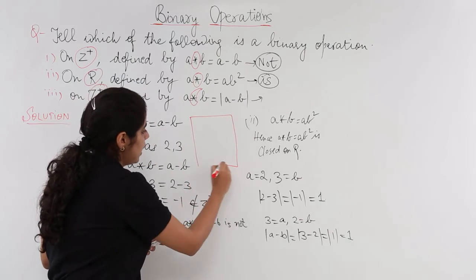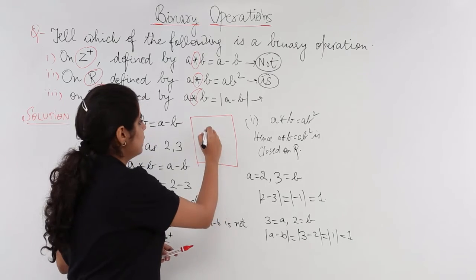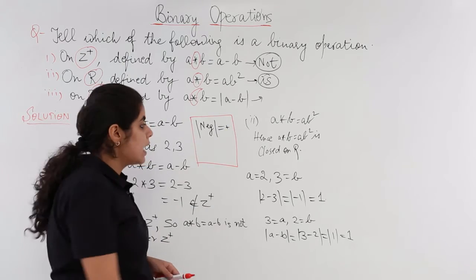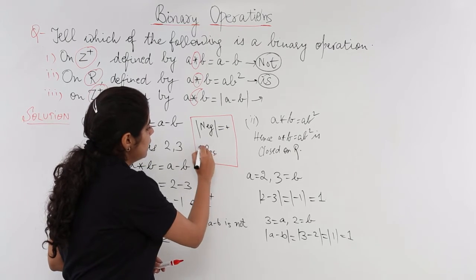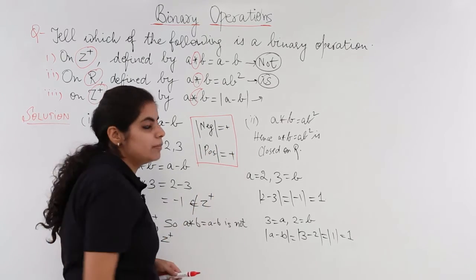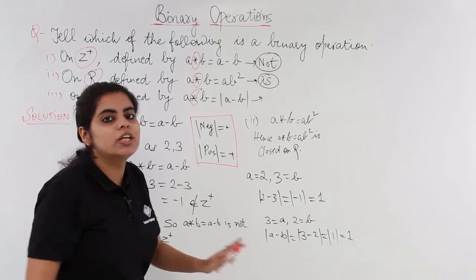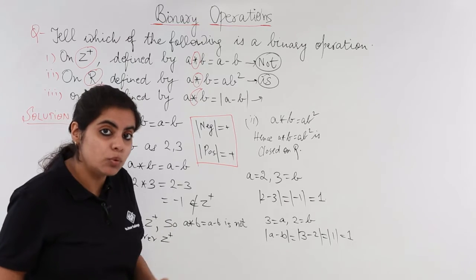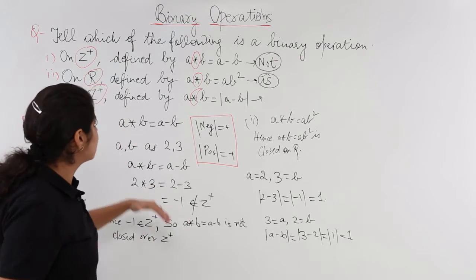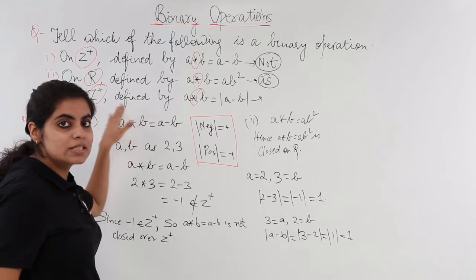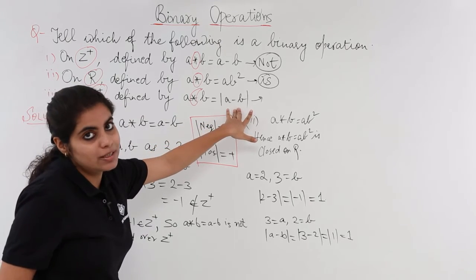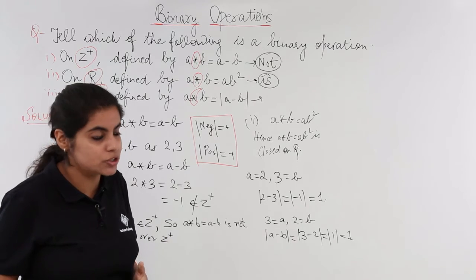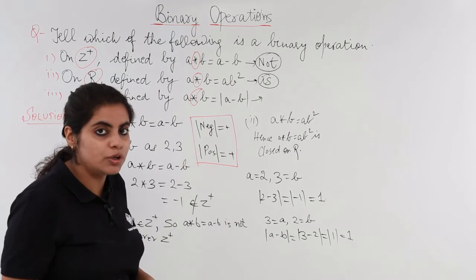So two points we studied by now. What? That if I have a negative number, modulus will make it positive and if I have a positive number, modulus will make it positive again. It will not change it. Now with this knowledge of what is modulus, let's move to the third part now. That Z positive is given. It is defined as modulus of A minus B and I am being asked whether it is a binary operation or not. We have seen what does mod do. Let's see what the question has to say.